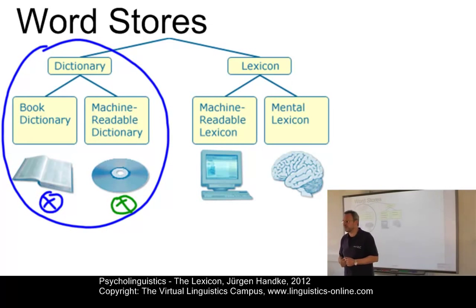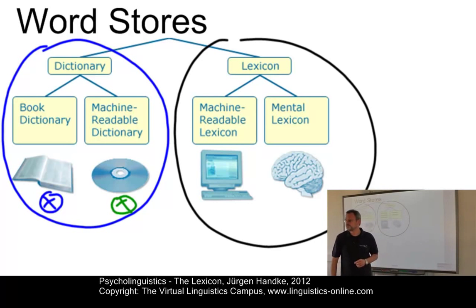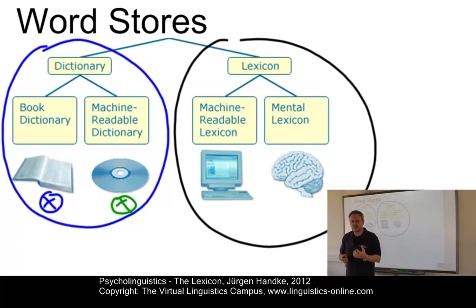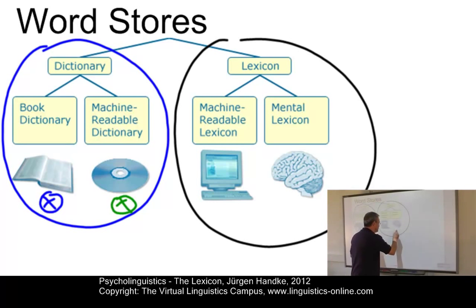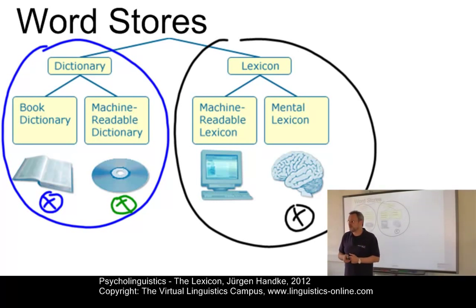A lexicon, by contrast, is the word store which is the central component of a natural language processing system. And this can be a human processing system — humans themselves — or a processing system which is part of a computer program, for example a machine translation program.